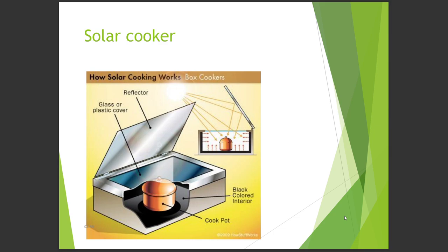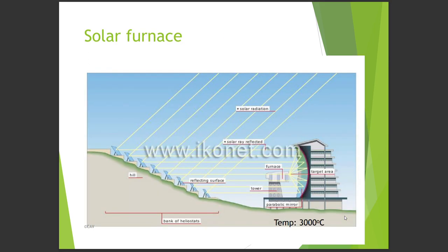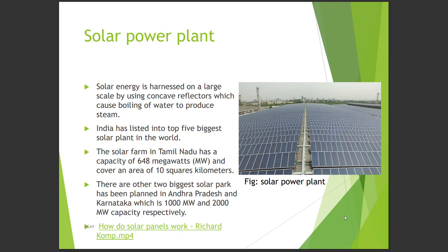We will discuss previous year question papers later, and if any functioning of solar devices is asked, notes will be prepared for those. Solar energy is harnessed on a large scale using concave reflectors which cause boiling of water to produce steam. India has entered the top five biggest solar plant countries in the world. The solar farm in Tamil Nadu has a capacity of 648 megawatts covering 10 square kilometers. Two more solar parks are planned in Andhra Pradesh and Karnataka with 1000 megawatt and 2000 megawatt capacity respectively.